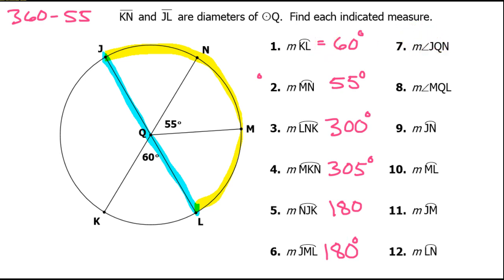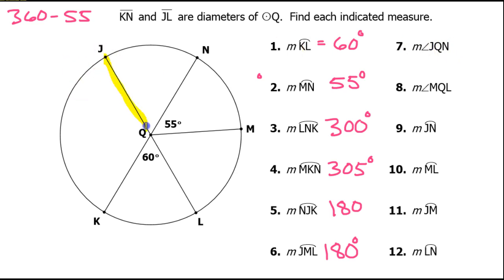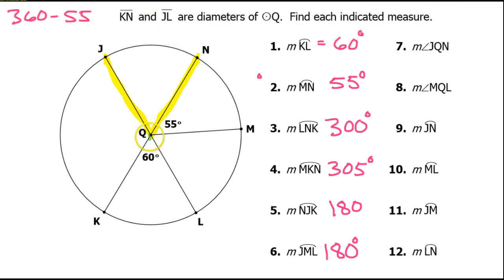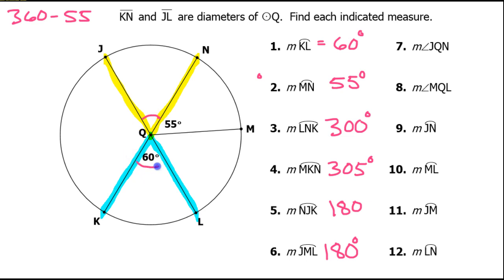For number 7, we want the measure of angle J, Q, N. I'm going to trace from J to Q to N — that's what we're looking for. Now look at the angle right across from this angle: angle K, Q, L. See how together they form an X? That means these are vertical angles. We learned that vertical angles are equal. So if this is 60 degrees, then this will also be 60 degrees.